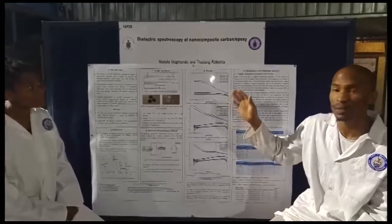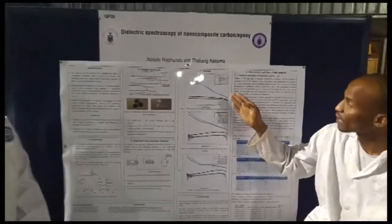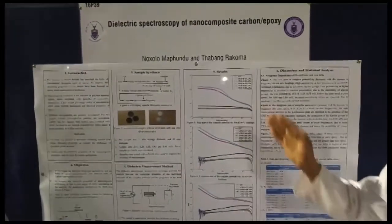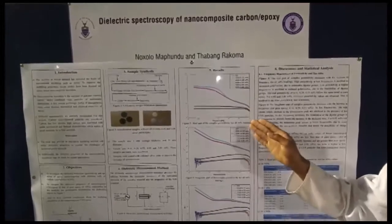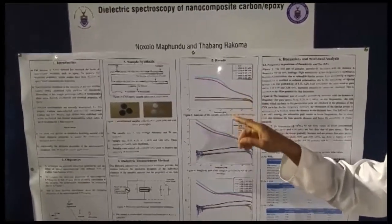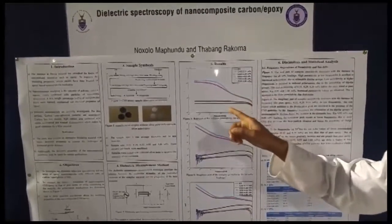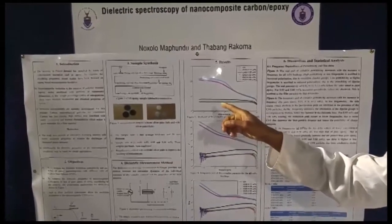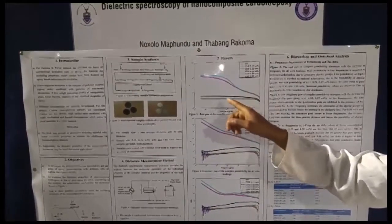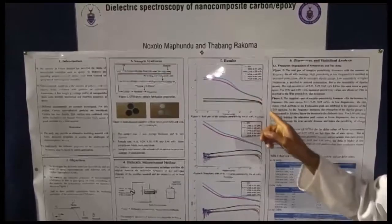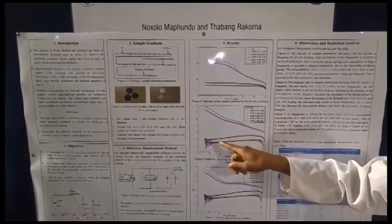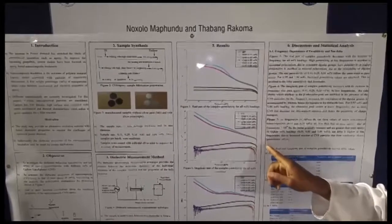The frequency response of the real and imaginary permittivity including tan delta is shown in the diagram. Figure 5 shows that the permittivity of the lower concentrated samples decreases with increasing frequency, and the losses increase with increasing frequency.